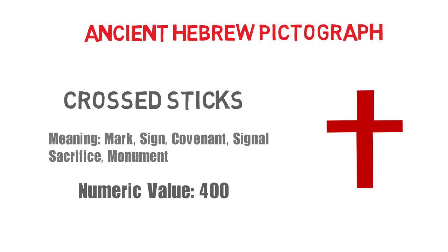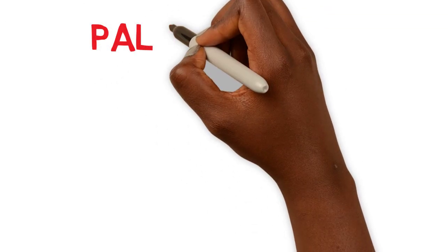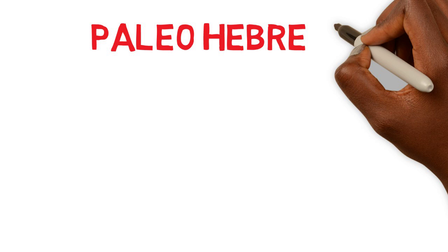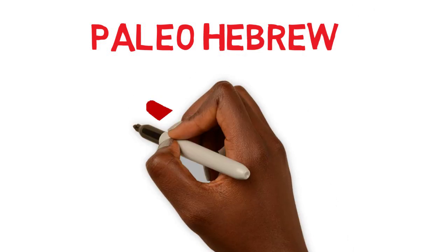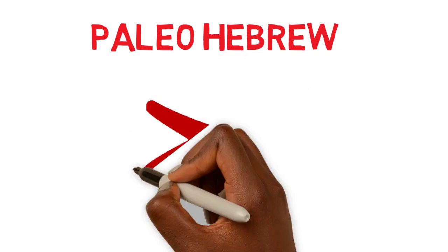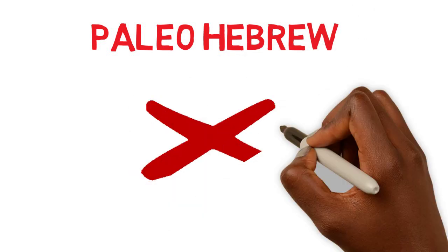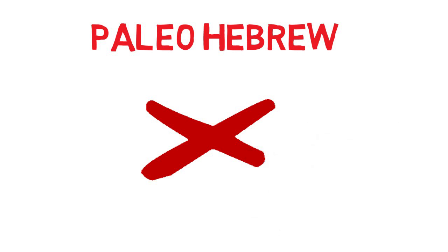Next we will take a look at the Paleo Hebrew. This is Tau in the Paleo Hebrew, which is again a variation of two crossed sticks.